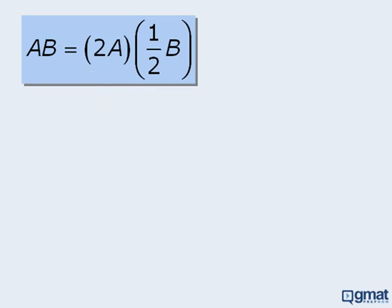This tells us something important. It tells us that if we are multiplying two numbers, then the product of those two numbers will be the same as the product we get if we double one number and halve the other number and multiply them together.